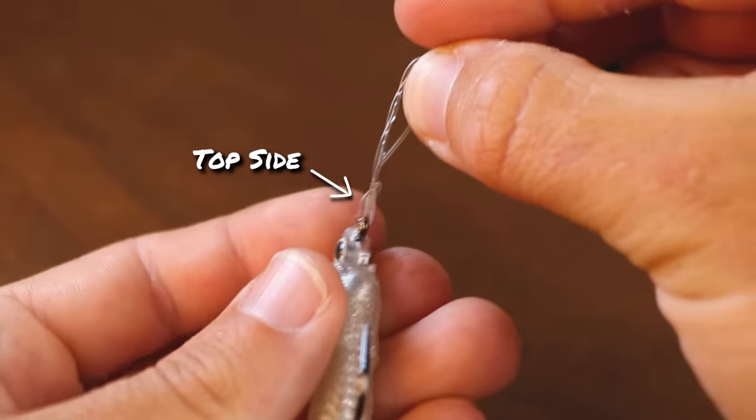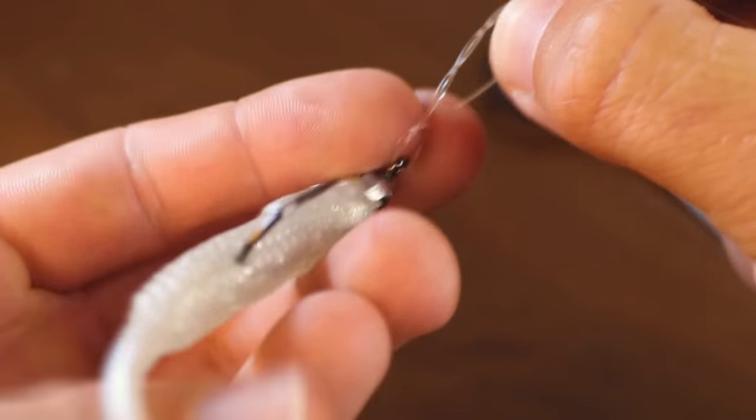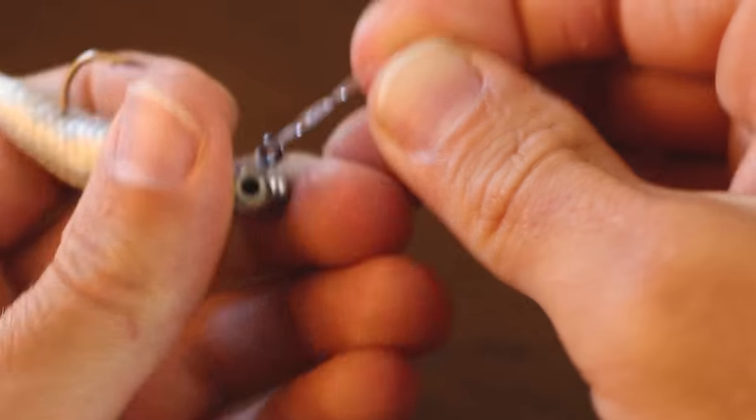And then we identify the top side and the bottom side of that loop. It looks like top side is over here. So we're going to turn this a little bit and run it back through.